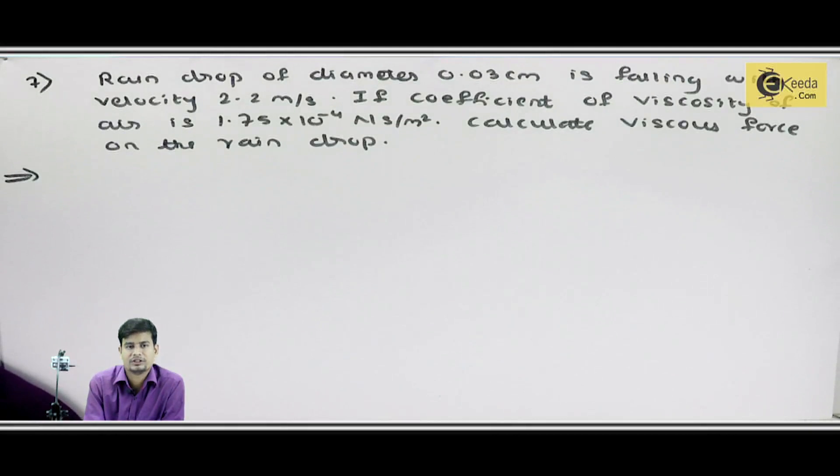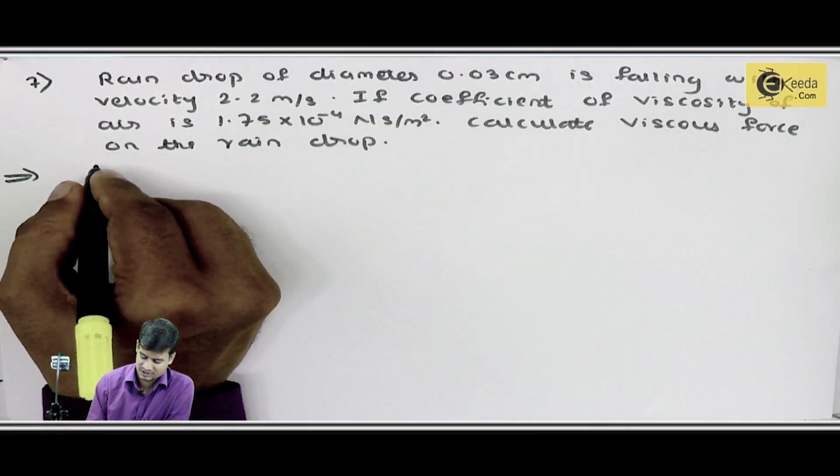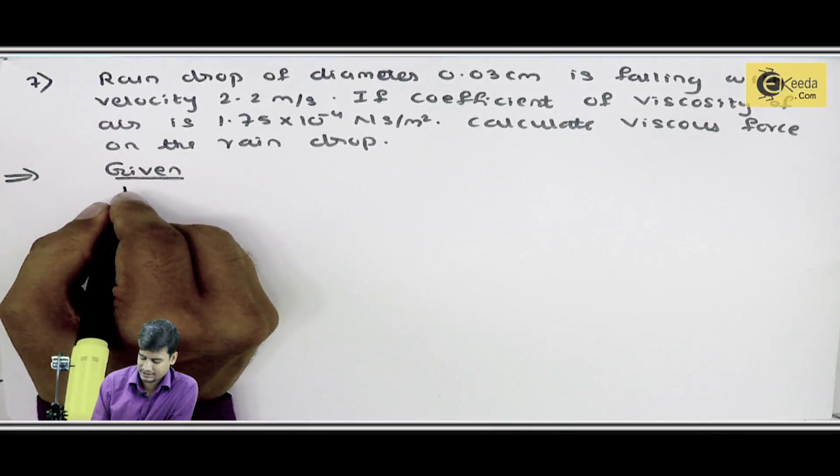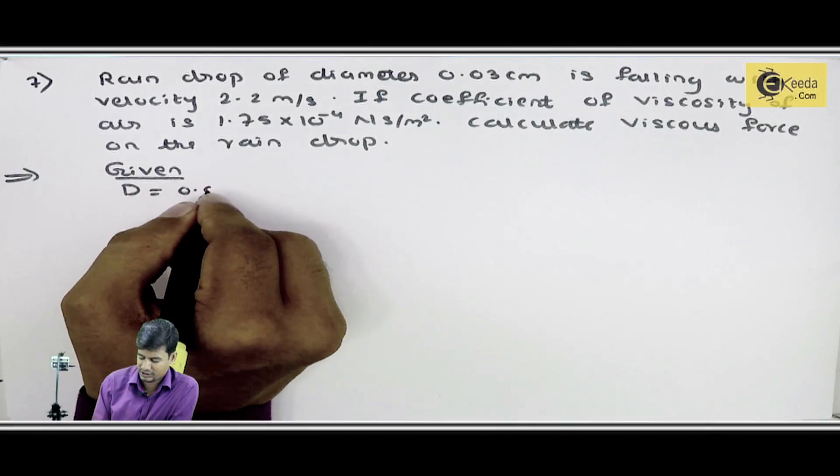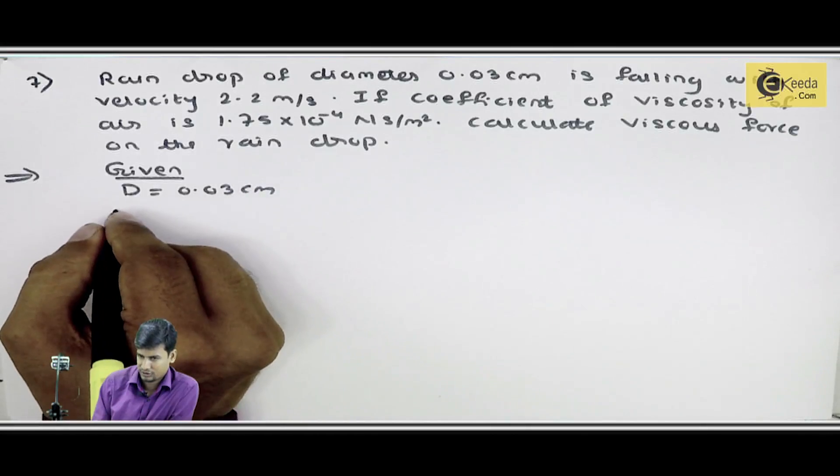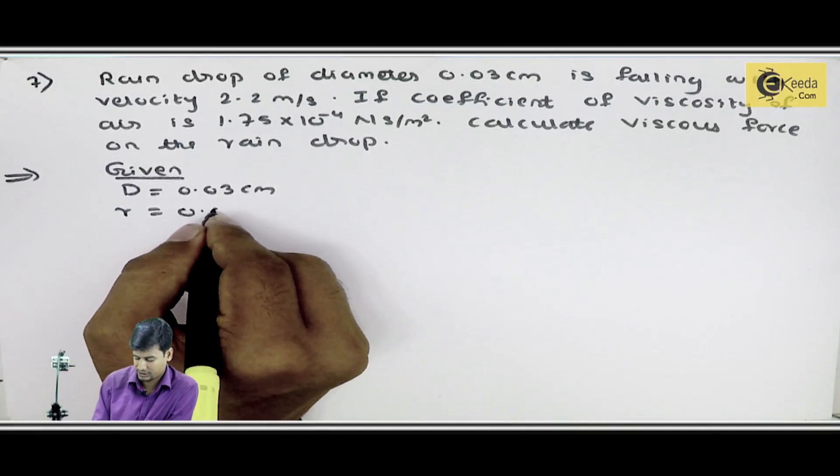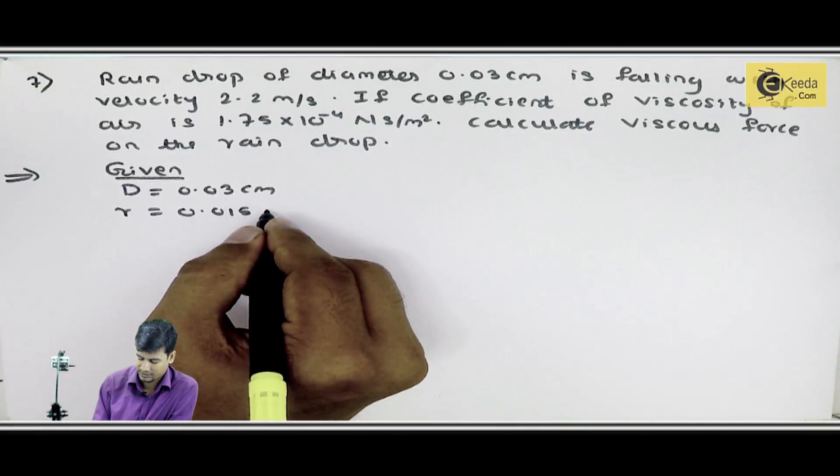Calculate viscous force on the rain drop. Mujhe viscous force find out karna hai, means f and note karna hai. Toh, saab se pahala given terms. Diameter 0.03 centimeter given hai, isko radius me convert karta hoon. Toh, radius hojaega merah something 0.015 centimeter.